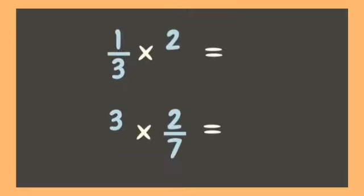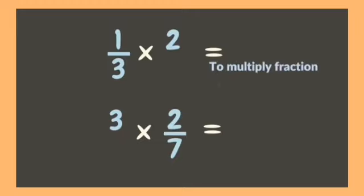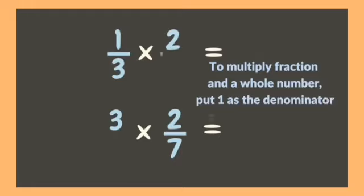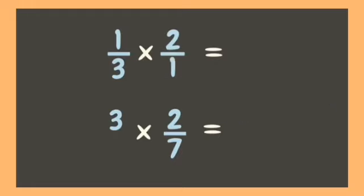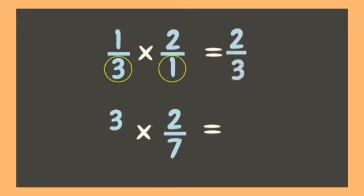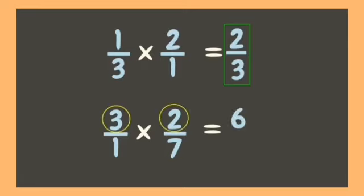Now let's multiply a fraction by a whole number. When multiplying a fraction and a whole number, we put one as the denominator of the whole number, then simply multiply. One times two is two, three times one is three — our final answer is two-thirds. Another example: three times two-sevenths. Put one as the denominator of three. Three times two is six, one times seven is seven. Since it is in its simplest form, six-sevenths is our final answer.